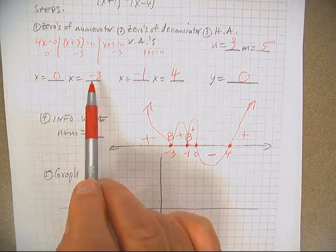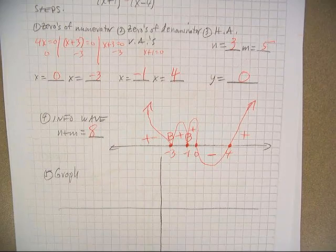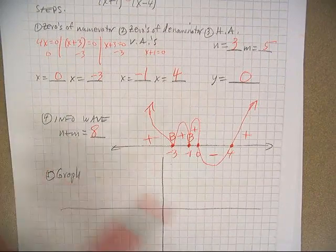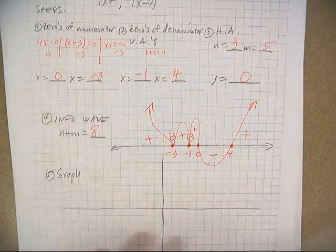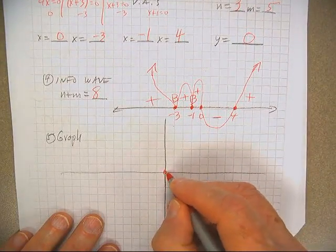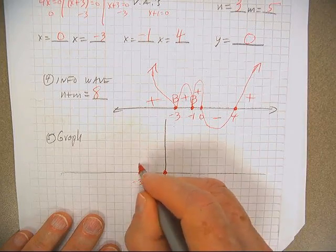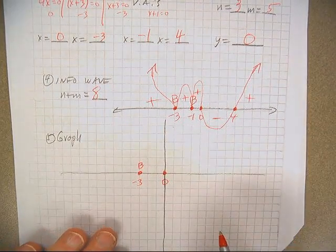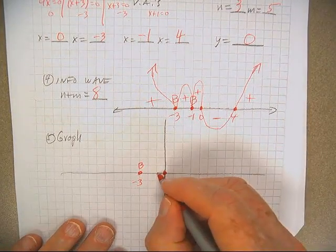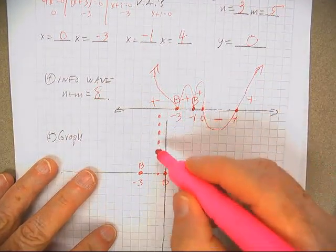So you got to make sure you bounce when you get to negative three, so that'll be no big deal. Okay, so now let's get this graphed. So I'm going to have to intersect this point, one, two, three. I'm going to bounce at that point at negative one. I've got a vertical asymptote.